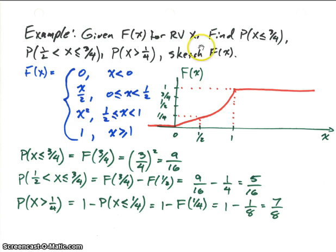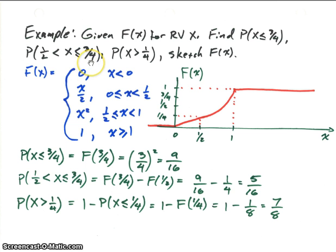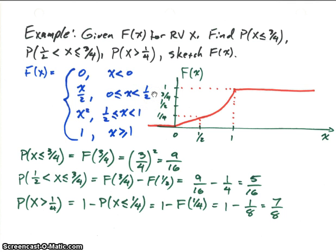Let's look at an example. We're given the cumulative distribution function and we're going to find some probabilities. What's the probability that x will be less than or equal to 3/4? What's the probability that x will be between 1/2 and 3/4? And greater than 1/4? We're also going to sketch the function. It's defined over different regions: 0 for x less than 0; x/2 for x between 0 and 1/2; x² for x between 1/2 and 1; and 1 above 1.